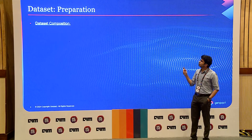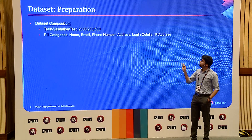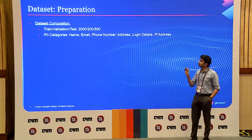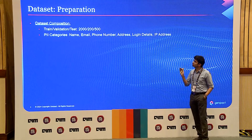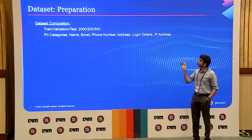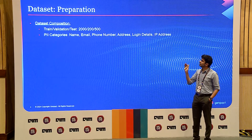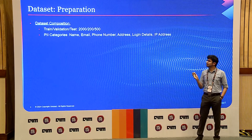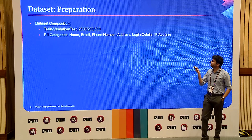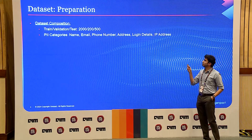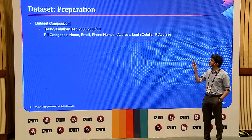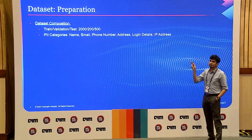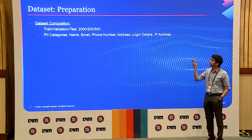Next we move on to the preparation. As mentioned, it's a limited data scenario. We use just a limited amount — around 2,000-something for training and 200 and 500 for validation and testing — trying to simulate a case where humans can label that much data. And these are the PII categories we are going to be masking: name, email, phone number, IP address, login details, etc. Login details include username and password but it's one category.